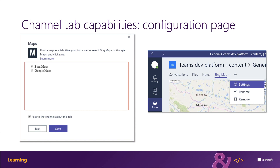Here's an example of a channel tab configuration page experience. The image on the left is the configuration page that prompts the user for the mapping site to use in the custom tab, while the image on the right shows the tab in context with a context menu. If the channel tab doesn't have the can update configuration property set to false, the settings option is displayed in the menu, and selecting it displays the configuration page again.